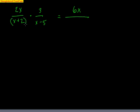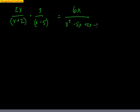When you multiply those, you've got to think x squared, a negative 5x, a 2x, and the minus 10. Then I can go ahead and combine. I get 6x on top. On the bottom I get x squared minus 3x minus 10.